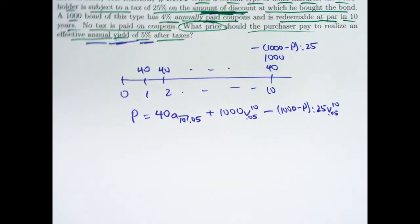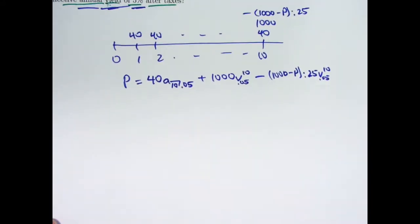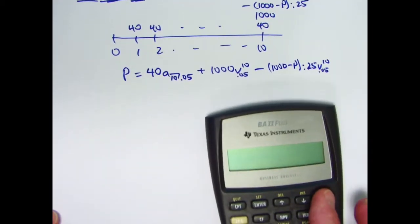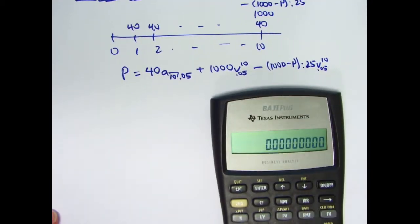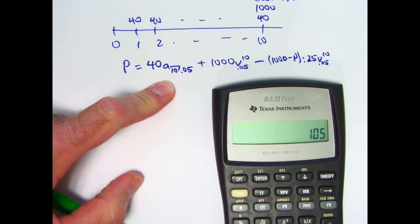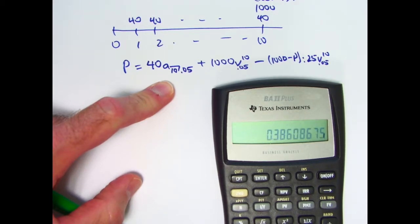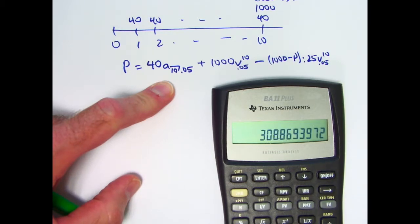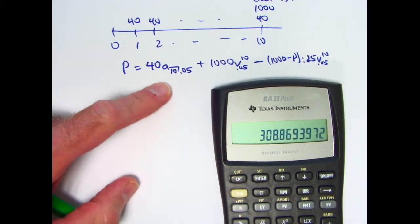This is really a linear equation in P, so it's not too hard to solve. Let's figure out the first term: 1.05 to the negative 10th power, subtract from 1, divide by 0.05, then multiply by 40. That gives 308.87, which I'll store in register 1.